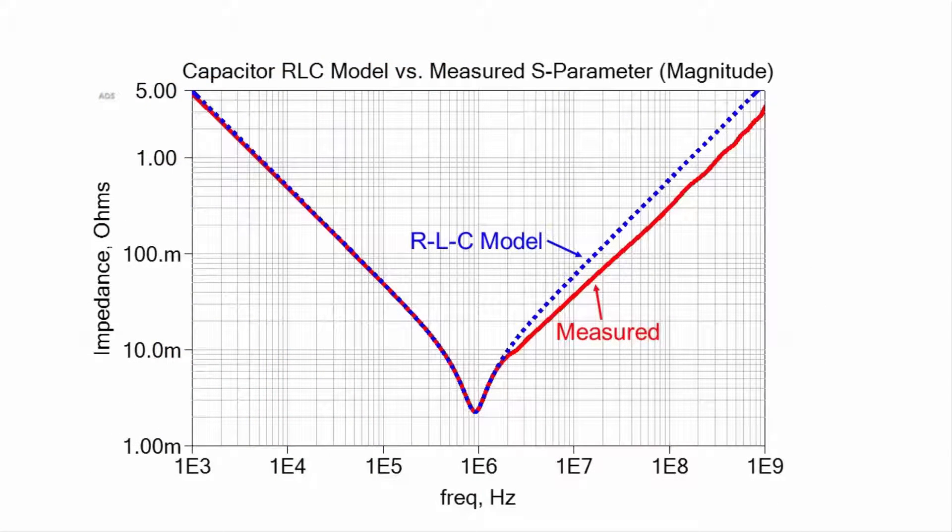Distributed decoupling capacitors reduce the high frequency inductance of the power planes, minimizing the voltage noise. The model shown here requires half as many decoupling capacitors as the RLC model to achieve the same inductance.